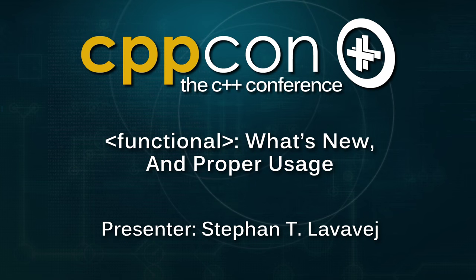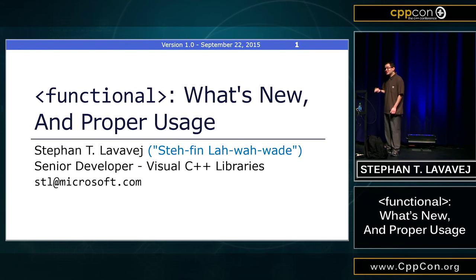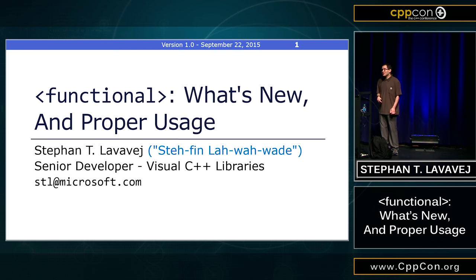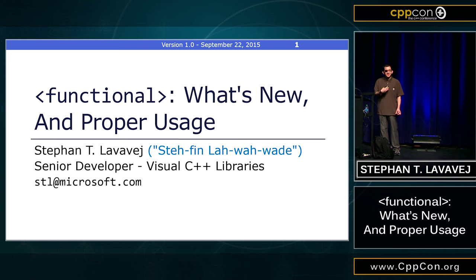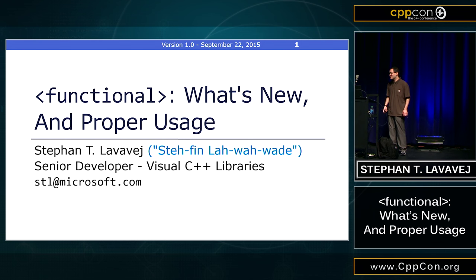Let's get started. Hi, I'm Stefan T. Laowage. For the past eight, almost nine years, I've been working on VC's STL implementation. I'm here to talk to you today about Functional, which is a header that existed all the way back in C++98 but has expanded dramatically, possibly more so than any other header in the standard library through C++11, 14, and the upcoming C++17. Some people refer to it pessimistically as C++1Z, but I'm an optimist — I think it actually will be 17.